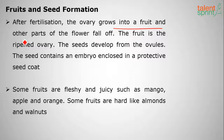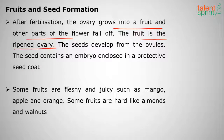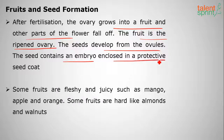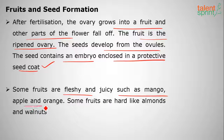After fertilization, fruit and seed formation takes place. The ovary grows into a fruit, and other flower parts like petals and sepals fall off. The fruit is the ripened ovary — an important exam point. The seeds develop from the ovules. Seeds contain an embryo enclosed in a protective seed coat. Some fruits are fleshy and juicy, such as mango, apple, and orange; others are hard, like almonds and walnuts.